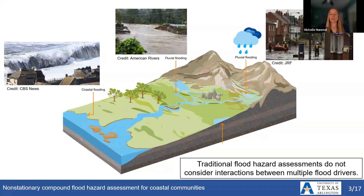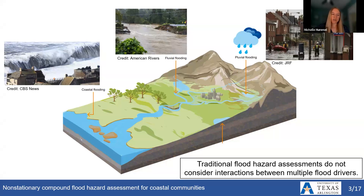We want to understand how these different drivers interact and how they are dependent on one another in order to predict potential impacts to people and infrastructure. Until recently, most studies of flood drivers focused on coastal or fluvial flooding separately. FEMA generates flood maps used to inform land use planning and insurance requirements, but FEMA uses separate methods to delineate riverine and coastal flood hazard zones. There's no consideration of the possibility of interactions between coastal and riverine processes, which has limited our ability to accurately determine flood risks in coastal areas where all these processes potentially occur simultaneously.